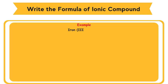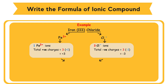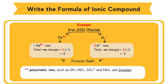Example: Iron(III) chloride has Fe³⁺ cation and Cl⁻ anion. One Fe³⁺ ion and three Cl⁻ ions. Total positive charge equals 1 × (+3) = +3. Total negative charges equals 3 × (−1) = −3. So the formula is FeCl₃. When polyatomic ions such as OH⁻, NO₃⁻, SO₄²⁻, and NH₄⁺ are involved, brackets are used to show the number of ions in the formula. Mg(OH)₂ — the brackets show there are two groups of OH⁻. Fe(NO₃)₃ — the brackets show there are three groups of NO₃⁻.